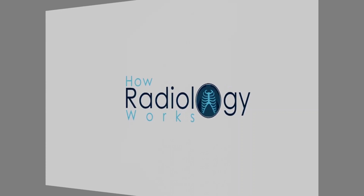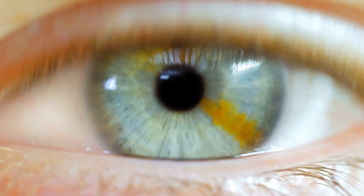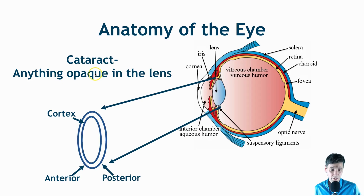We'll first define what cataracts is and why it happens — that if you have relatively high levels of radiation, you have a higher rate of developing cataracts. So this is the anatomy of the eye. In general, the light comes in here, is projected onto the back of the eye, and then the signal passes through the optic nerve and is interpreted by the brain.